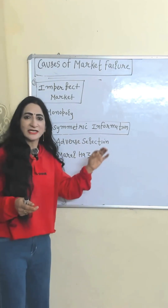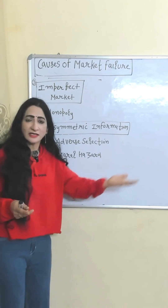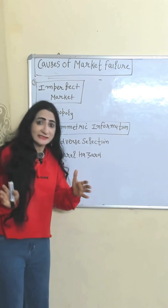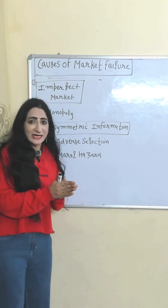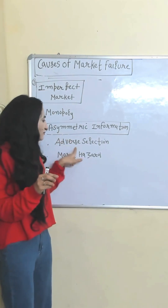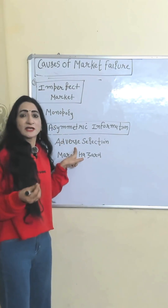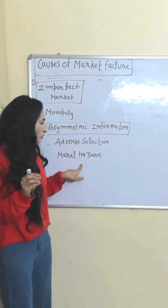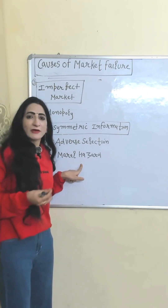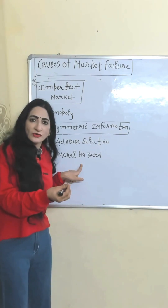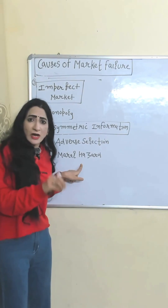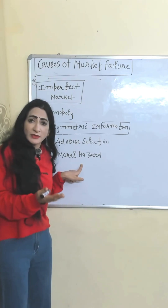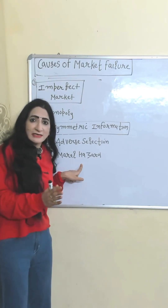Asymmetric information means when one party has more information than another. For example, a seller knows his product is faulty but still sells it because the buyer has no information. Asymmetric information leads to adverse selection, which is a wrong selection of product. It also leads to moral hazard, where one party changes their behavior after a contract — for example, a tenant deliberately damaging a home knowing the landlord will bear all expenses.